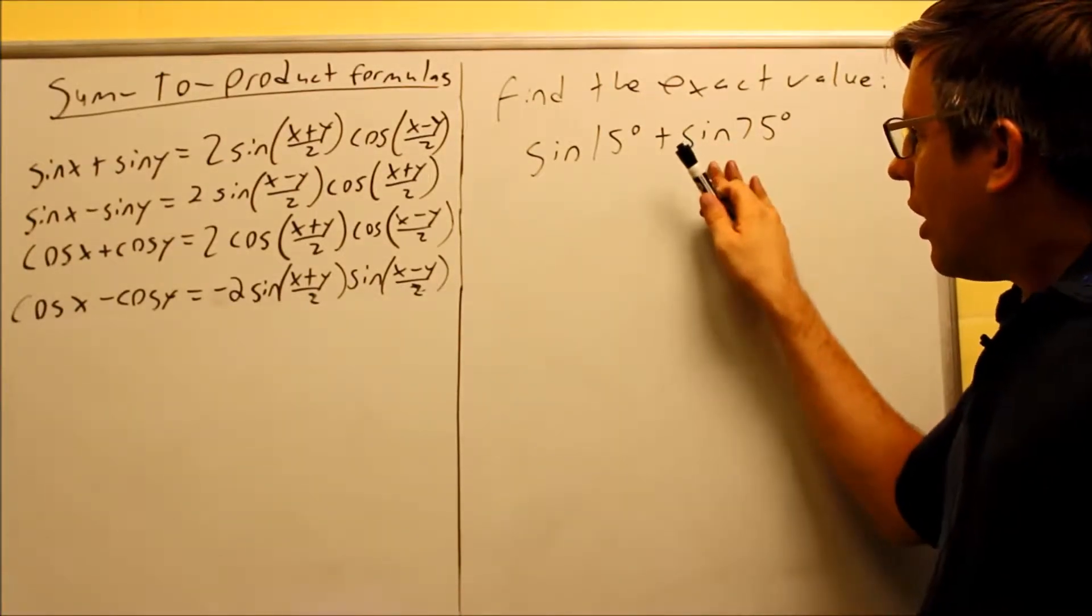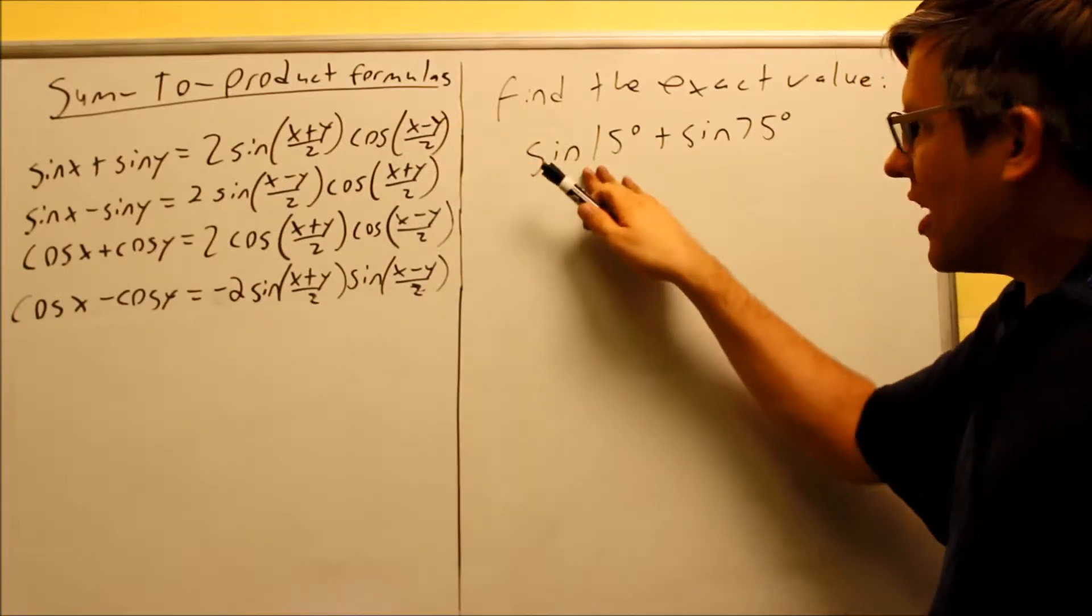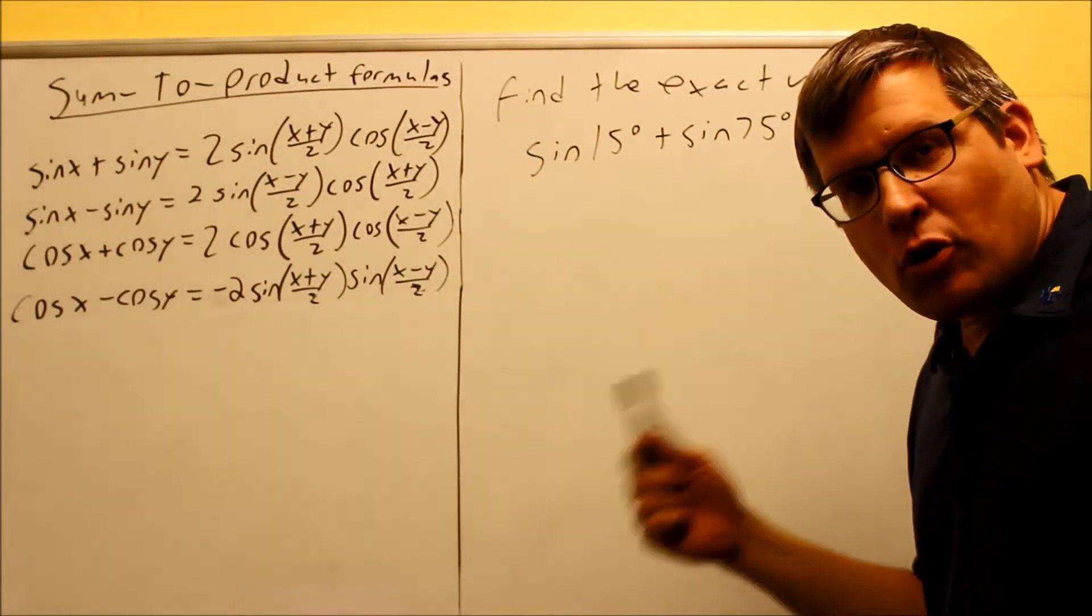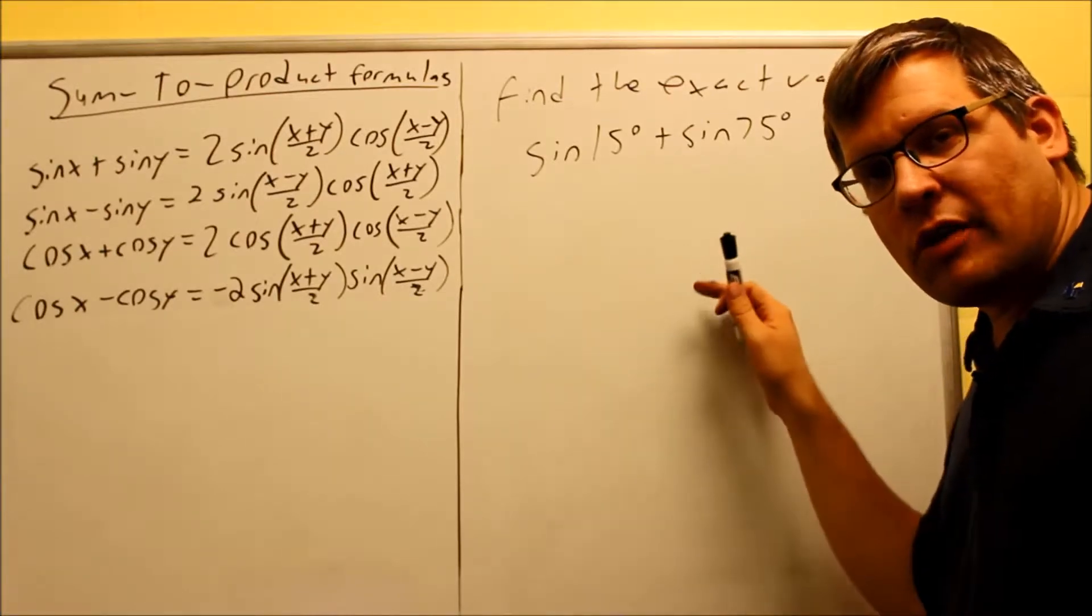So in order to do this, we would need to use one of these formulas. Sine of 15 and then 75, those are not angles that are on my table or my unit circle. So we need another way of doing that.